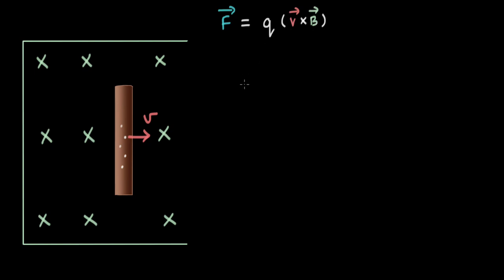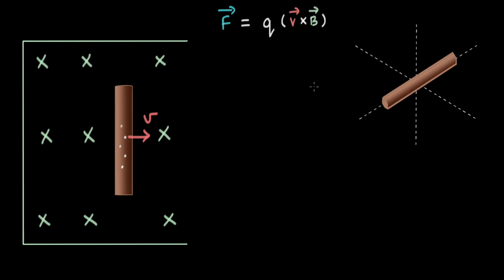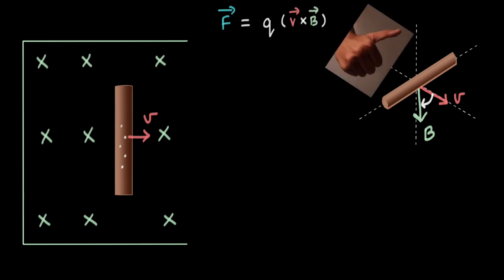The direction of this Lorentz force is in the direction of V cross B. To understand the direction, let's look at this setup from a certain angle. The rod is moving in this direction with velocity V and the magnetic field is vertically downward. To figure out the direction of V cross B, we take our right hand, curl our fingers, and the thumb's direction gives us the direction of the force.